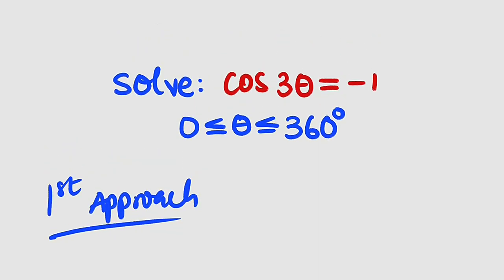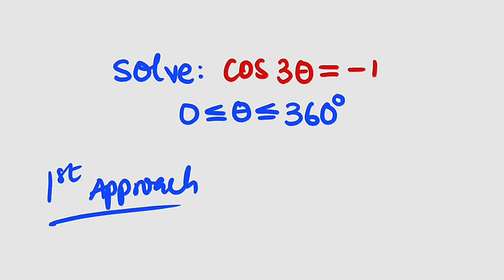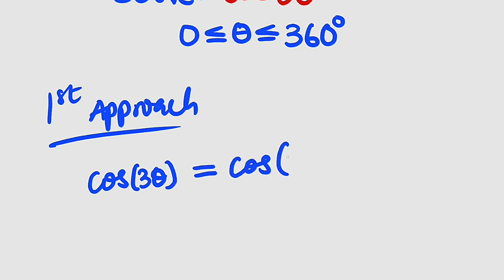In the first approach, I'm going to introduce some identities. Let me take cosine of 3 theta and simplify it before we equate it to negative 1. If you have cosine of 3 theta, you should know that this can also be written as cosine of 2 theta plus theta, because 2 theta plus theta is the same thing as 3 theta.